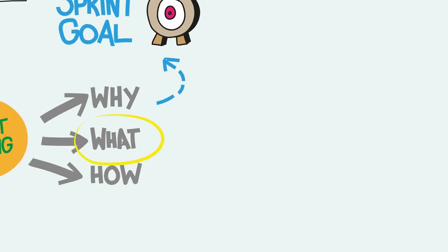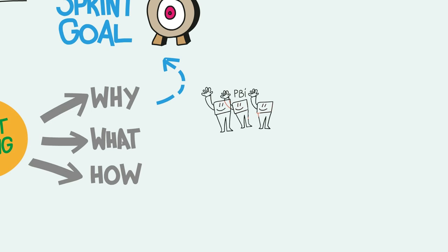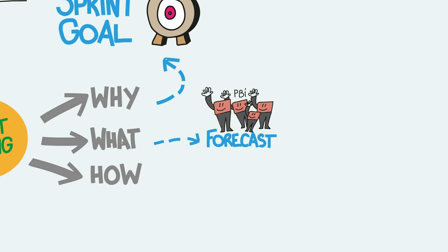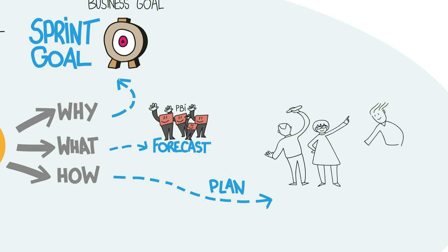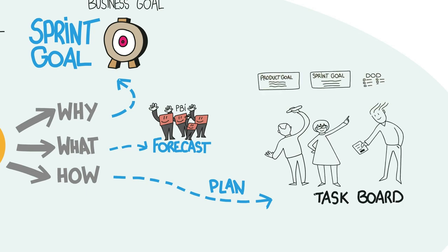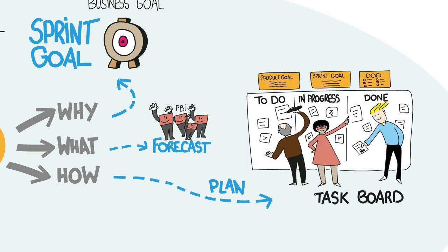What are we going to deliver this sprint? This is a list of backlog items that the team believes will enable them to achieve the sprint goal — I call this the forecast. Like the sprint goal, the team believes it can deliver the forecasted items. How will we accomplish the sprint goal? This is an actionable plan for achieving the sprint goal. The sprint backlog consists of the sprint goal, the forecast, and the task planning, but does not define who does which tasks when.